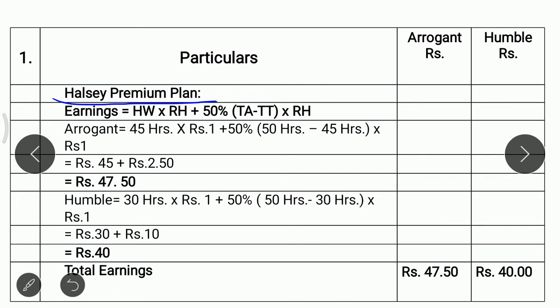In case of Halsey Premium Plan, the formula is: Earnings = Hours Worked × Rate per Hour + 50% of (Time Allowed − Time Taken) × Rate per Hour. In case of Arrogant, he works 45 hours at Rs. 1 per hour, giving Rs. 45. Plus 50% of (50 − 45) = 50% of 5 hours = Rs. 2.50. So earnings of Arrogant is Rs. 47.50.